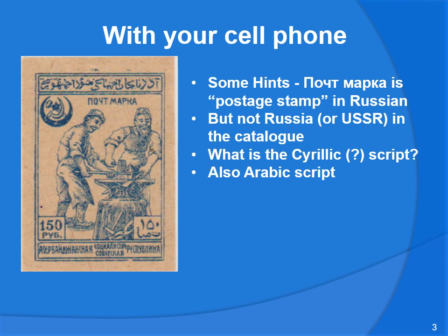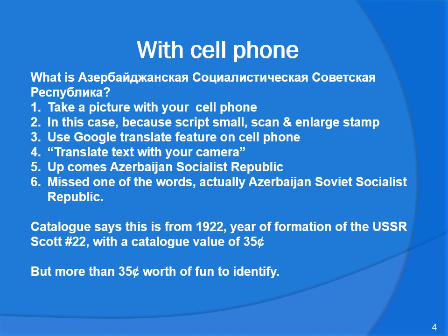So with your cell phone — here's a stamp and we have some hints. I'm not going to try to pronounce the Russian; 'Pochтовая марка' maybe means 'postage stamp' in Russian. But when we look in the catalog under Russia or the USSR, it's not there. We notice up at the top there appears to be Arabic script, and the currency is on the right-hand side at the bottom in Arabic script. At the bottom and on the left side, the value is in Cyrillic script. So what do we do? We're trying to find out the country name, which is written in Cyrillic.